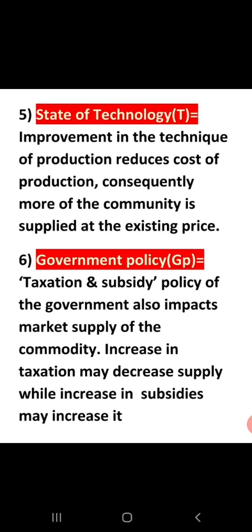Number six: government policy. The government opts for two types of policies — taxation and subsidies. Taxation and subsidies are policies that impact market supply. If tax increases, supply will decrease; and if subsidy increases, supply will increase. If the government imposes a tax on us, we will supply less; and if the government gives us subsidies on goods, we will supply more.